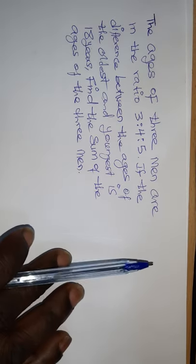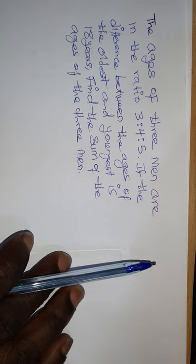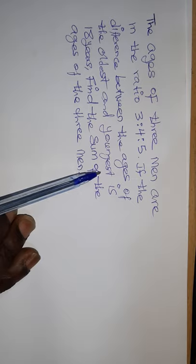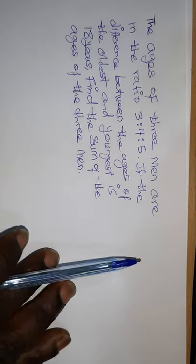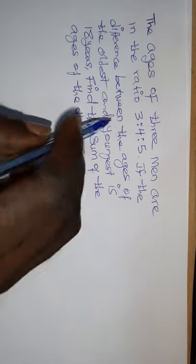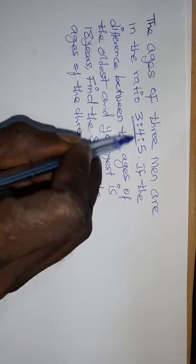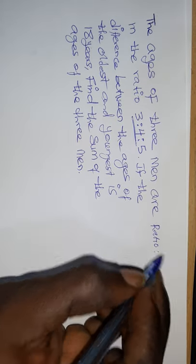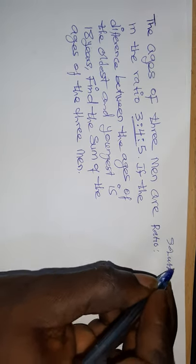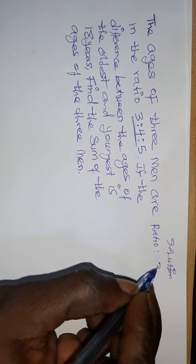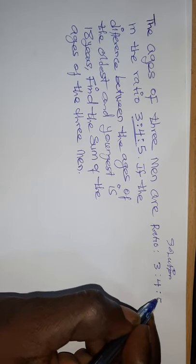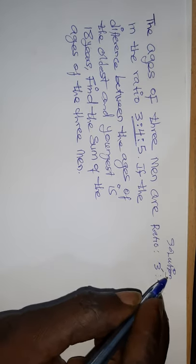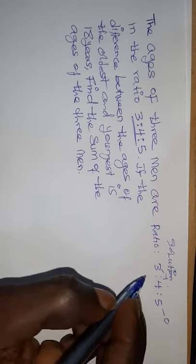Looking at this question, we need to bring in the noted parameter so that we'll be able to construct the solution. We have our ratio here. The ratio is 3:4:5, which means 5 is the oldest and 3 is the youngest.